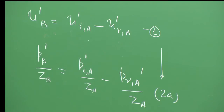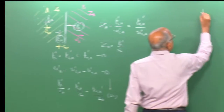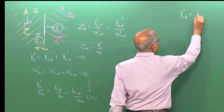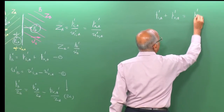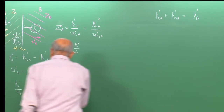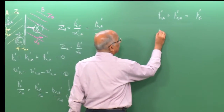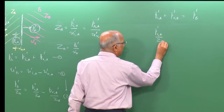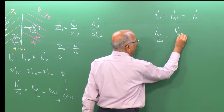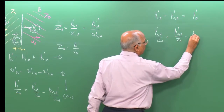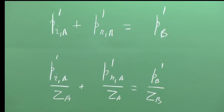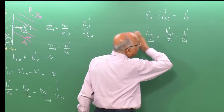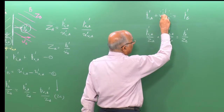Putting the two equations together: from equation 1, p_ia prime + p_ra prime = p_b prime. From equation 2a, p_ia prime / Z_a − p_ra prime / Z_a = p_b prime / Z_b. These are my two equations to solve for the reflected and transmitted pressures.